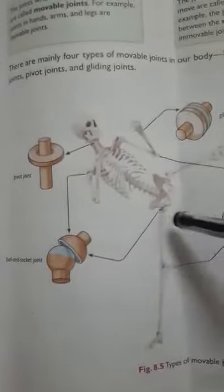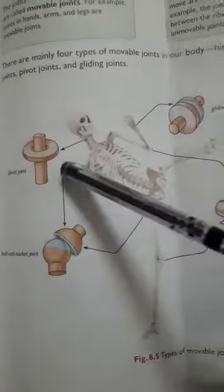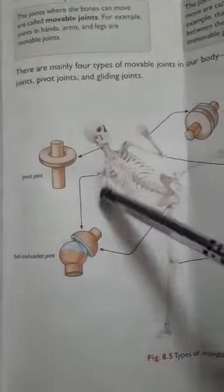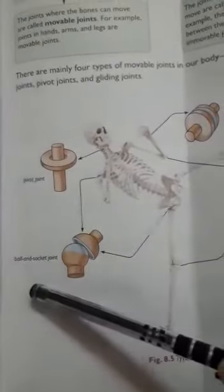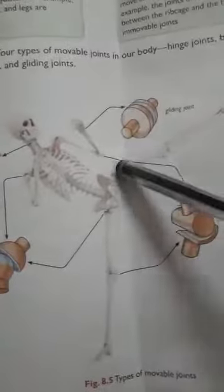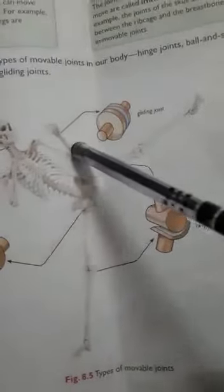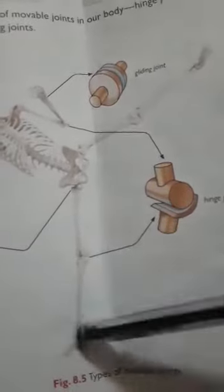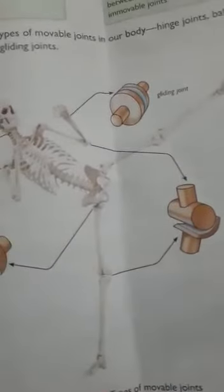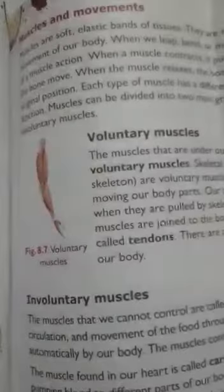So to summarize: the neck joint is a pivot joint; the pelvic and shoulder joints are ball and socket joints; the elbow and knee are hinge joints; and the wrist and foot bones are gliding joints.